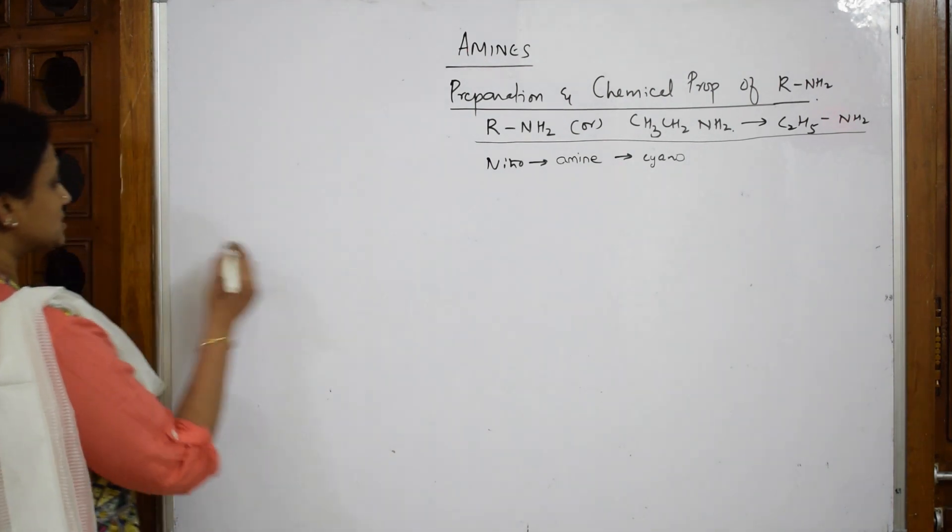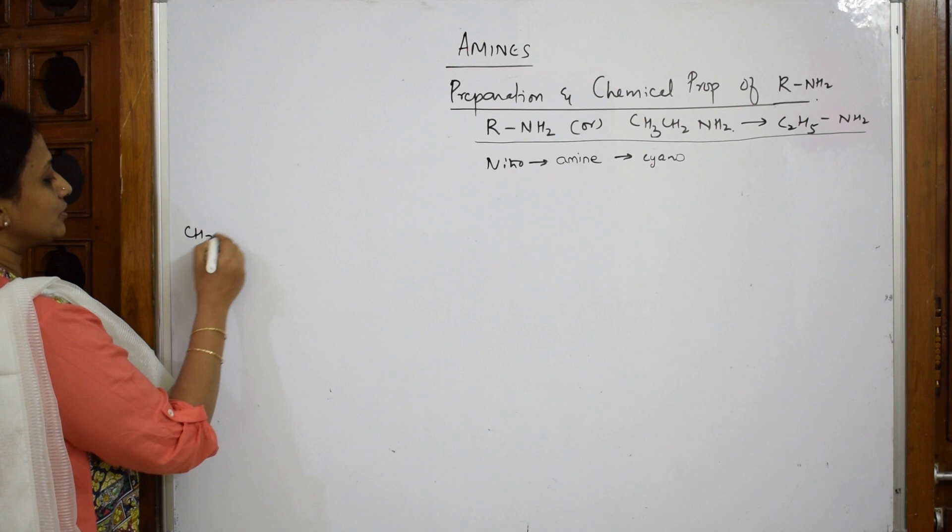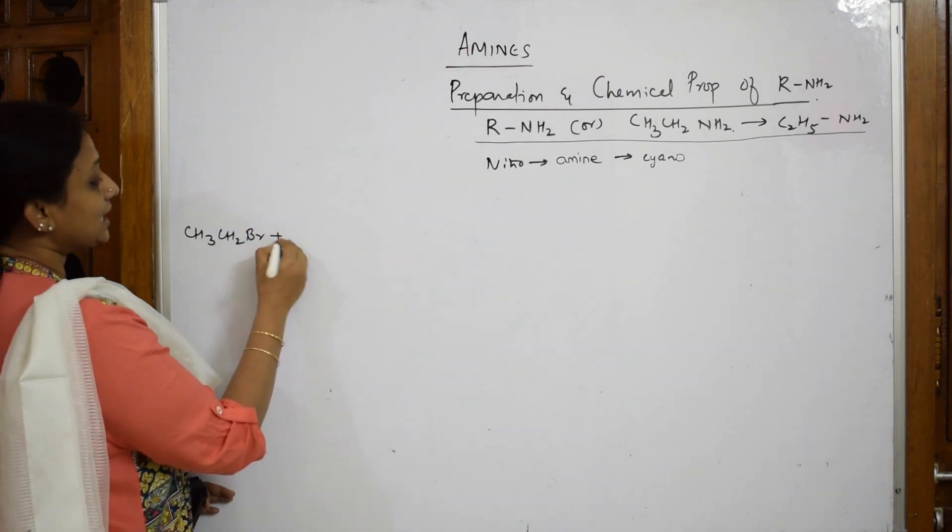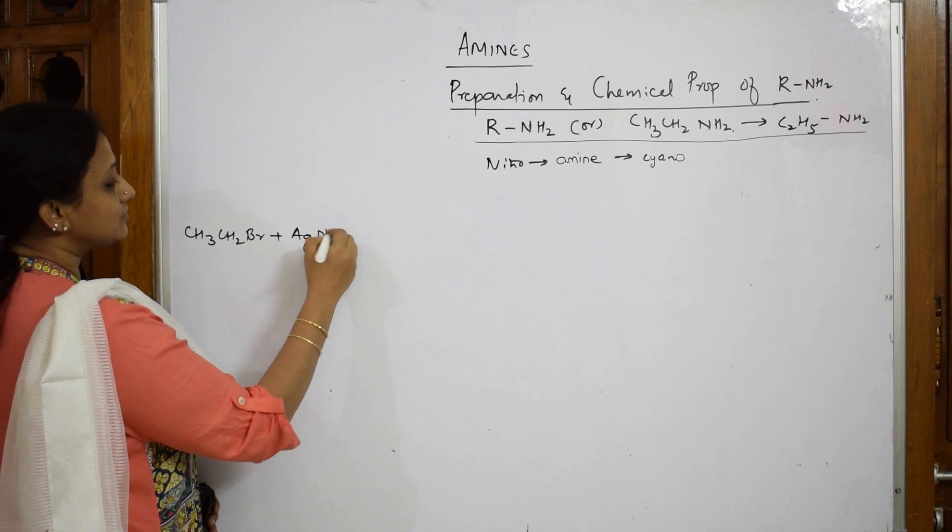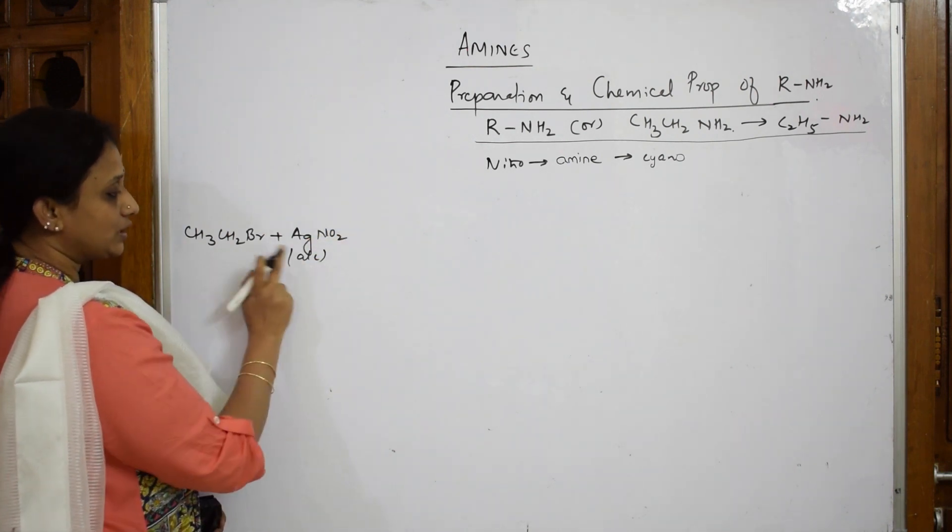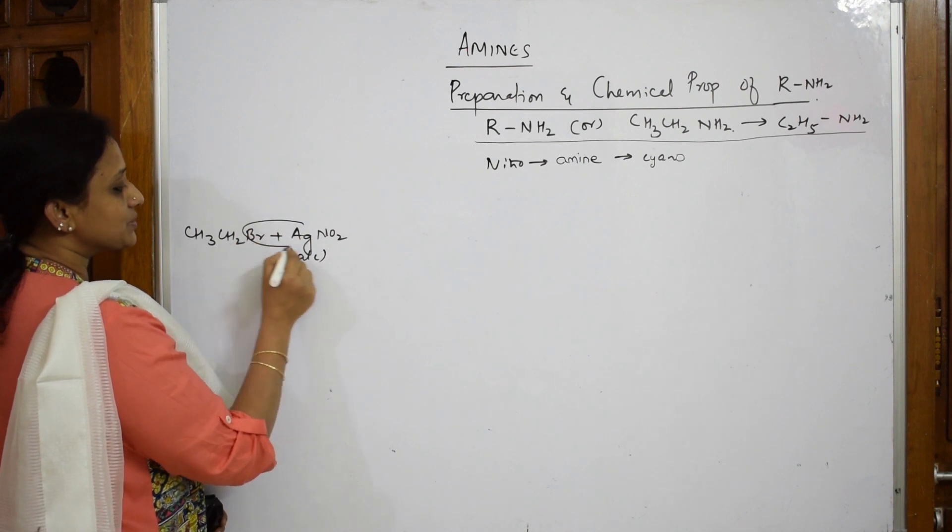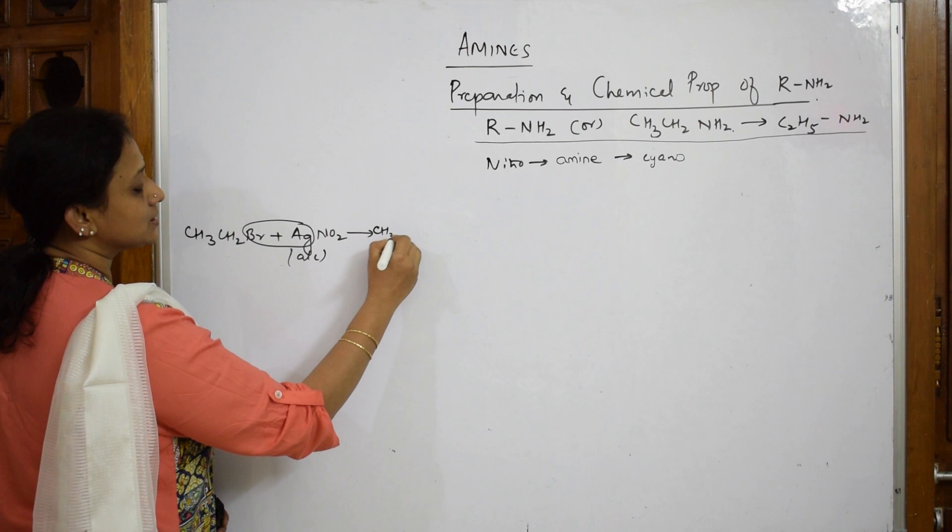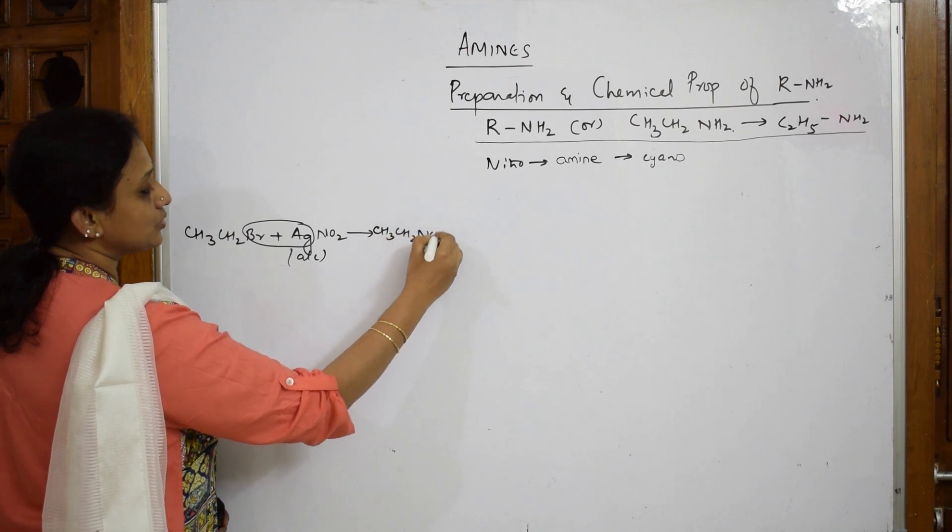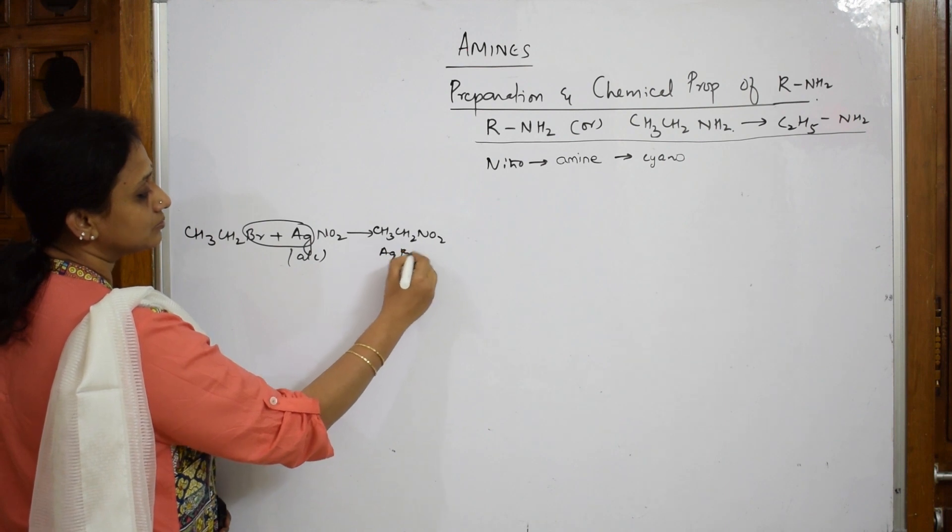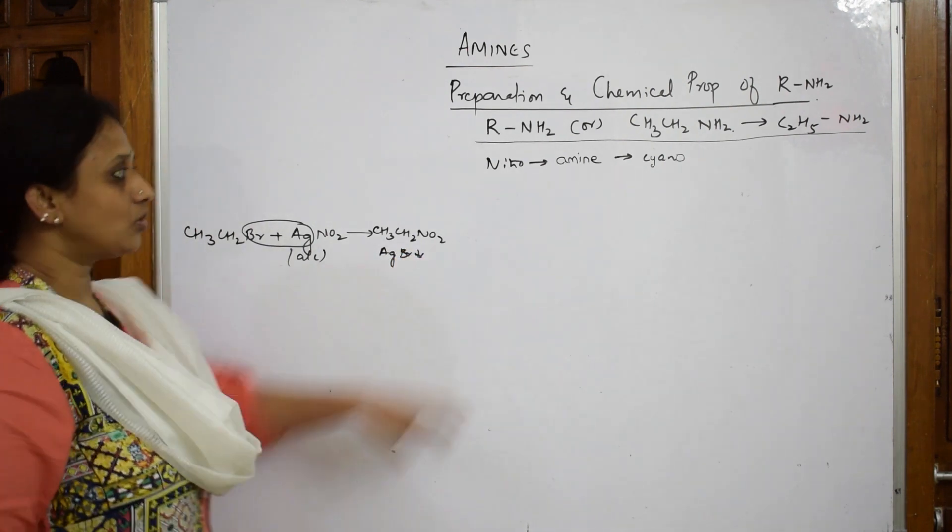When I have to learn primary amine, first important thing: you take an alkyl halide, to this you add silver nitrate in alcoholic medium. Why? Because silver precipitates out. When this precipitates, you get CH3CH2NO2, nitroethane, plus silver bromide.